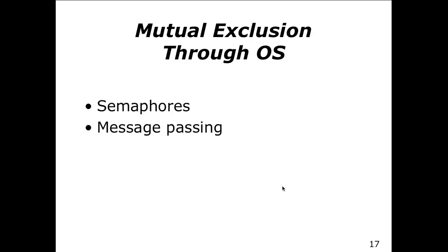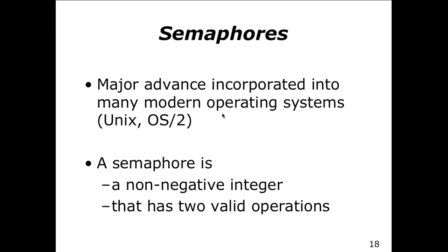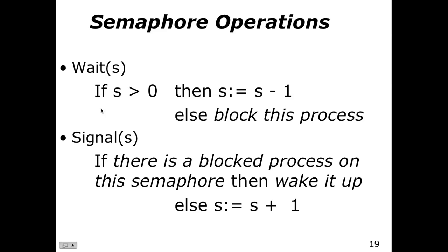Nowadays everything is done through operating system support for mutual exclusion. From an OS perspective, we have semaphores and message passing. A semaphore is a non-negative integer with two value operations — an on or off approach. We can wait on the semaphore and signal the semaphore to wake up and start processing. Essentially, a semaphore creates a block — we can wait on it or signal a blocked process to wake up and put the other one to sleep.